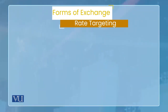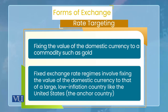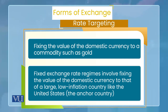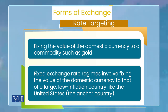अब exchange rate targeting के different forms हो सकते हैं। पहली form यह हो सकती है कि आप अपनी currency की value किसी precious metal से fix कर लें — जैसे gold के साथ या silver के साथ। जैसे gold के किसी unit जैसे ounce की price अपनी currency में तय कर लें और फिर उसी को achieve करें, यानि कि अपनी currency को उससे devalue ना होने दें। तो यह exchange rate targeting की एक form है।